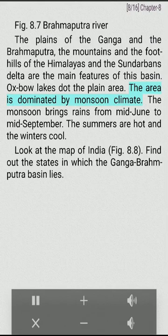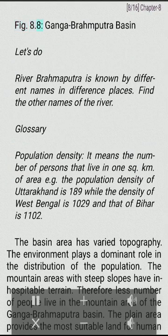Oxbow lakes. The plain area is dominated by monsoon climate. The monsoon brings rains from mid-June to mid-September. The summers are hot and the winters cool. Look at the map of India and find out the states in which the Ganga Brahmaputra basin lies.